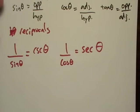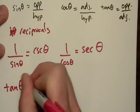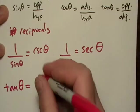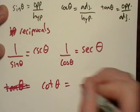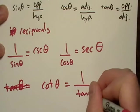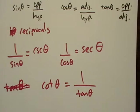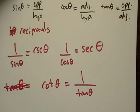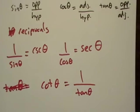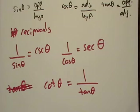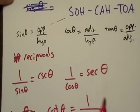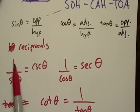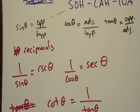Then you've got cotangent theta, and that's equal to one over tangent. Cotangent is easy to remember because it's the only one that doesn't have a trig suffix like the others. And if it's not either one of those, then it's obviously the secant.